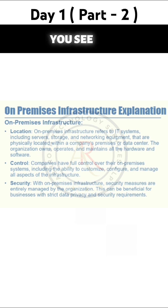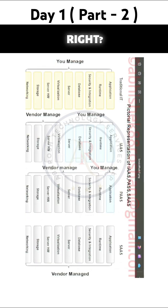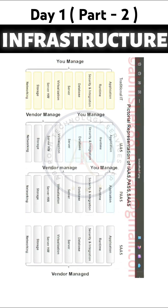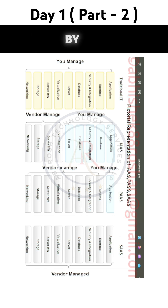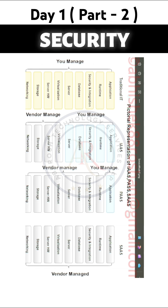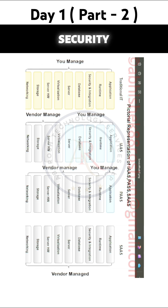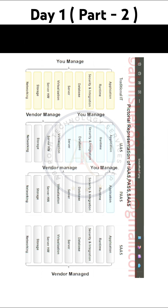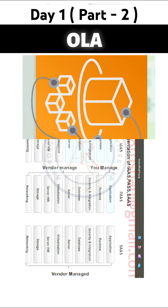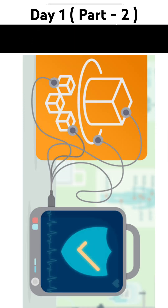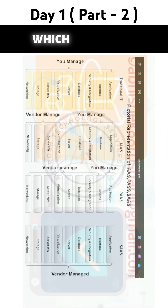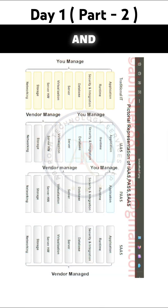If you look at a traditional IT infrastructure diagram, you'll see that everything is managed by you — whether it's your application, your runtime. For example, if you have an app like Ola running, the front end is managed by you, and the runtime is managed by you as well.